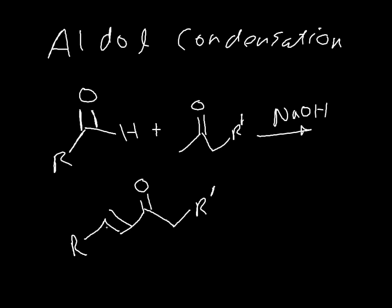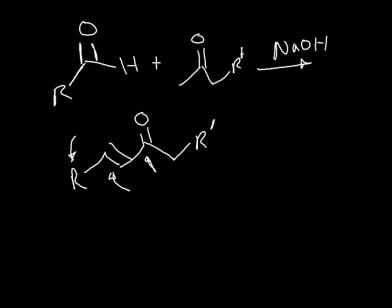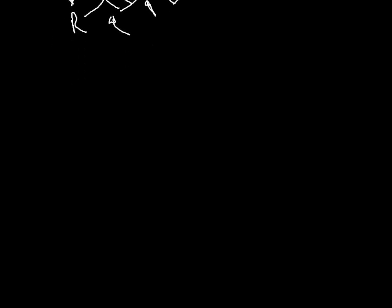And you get a product with a double bond right next to a carbonyl group. This is important because it's something you call conjugation where you have these bonds right next to each other, these double bonds. If this was say like a benzene ring right there, you'd have even more conjugation. So they do make some interesting products and you do make a new carbon-carbon bond.